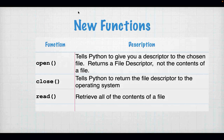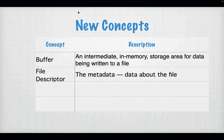We have some new functions. We have the function open, which is how you access your file. We have the close function, which tells Python to return the file descriptor. A file descriptor is just what you use to get to the data in a file. And read reads all the contents of the file. We'll also deal with readline and look at things like comma-separated values.